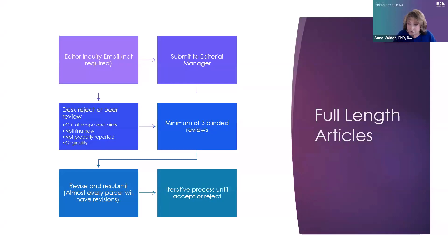After submission, Annie Kelly looks at it first. If there are major issues like a missing IRB, it'll come to me and I decide to either reject or send it for peer review. The most common reasons I reject at my level are: it doesn't fit our scope and aims, there's nothing new that will impact nursing practice, it might not be properly reported, or there may be originality issues — which is why it's important for you to tell me if parts of that manuscript were published somewhere else or if you've published on parts of the study before.